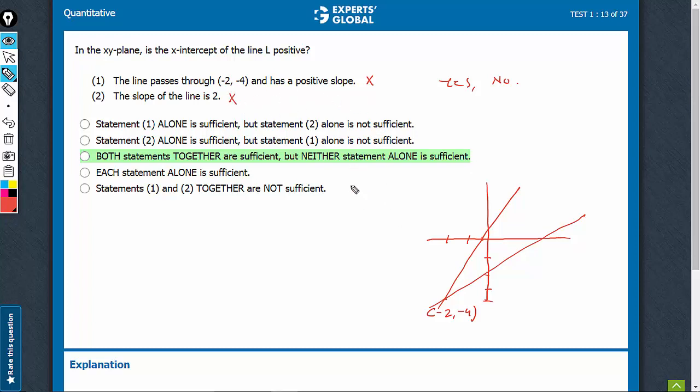Now, on combining, please see, you have the slope of the line, you have one point from which the line is passing. If this information is given, the equation of the line can be determined. If the equation of the line can be determined, of course, the x-intercept can be determined.